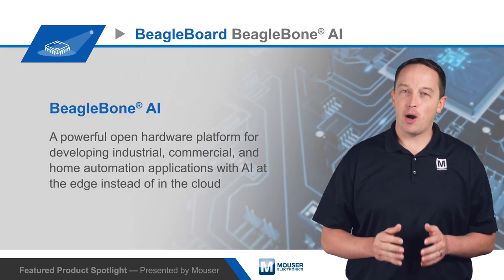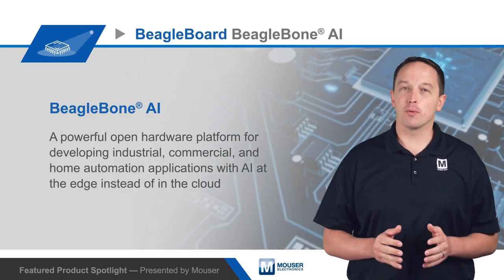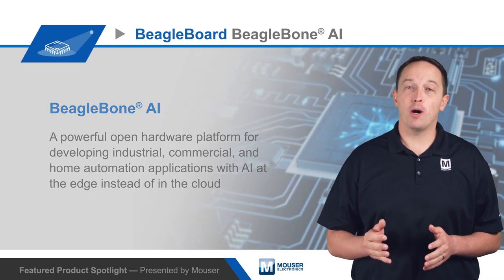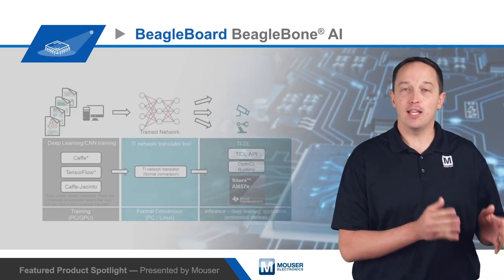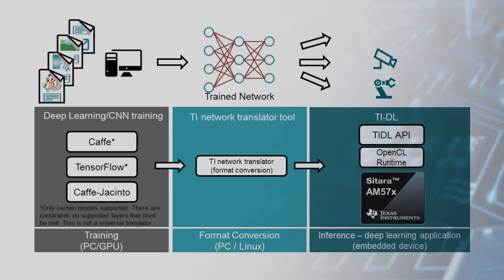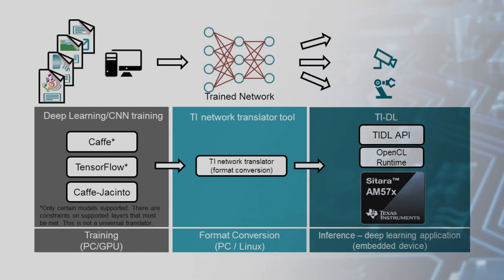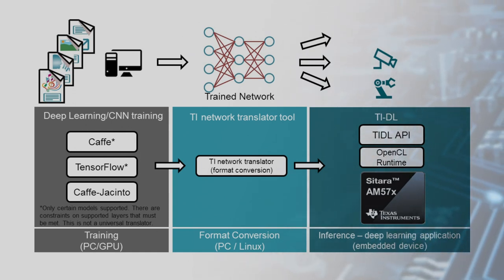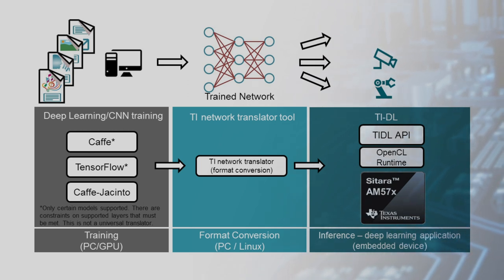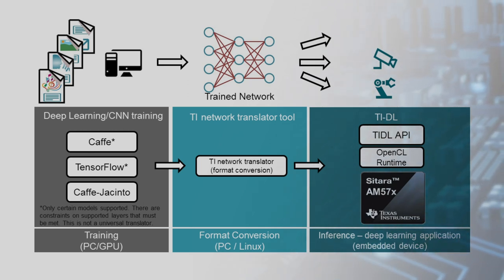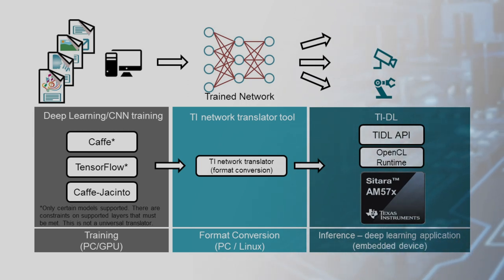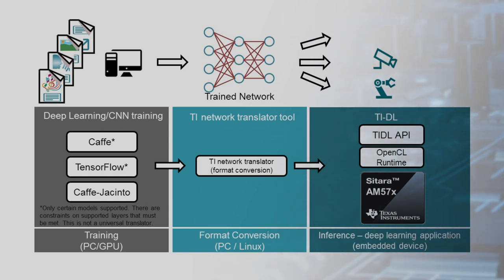BeagleBoard's BeagleBone AI is a powerful open hardware platform for developing industrial, commercial, and home automation applications with AI at the edge instead of in the cloud. The BeagleBone AI is based on TI's AM5729 Sitara processor and is supported by an optimized TI Deep Learning OpenCL API with pre-trained models and pre-installed tools.